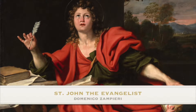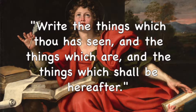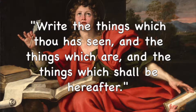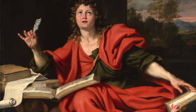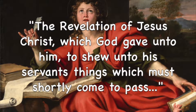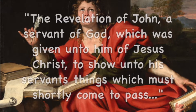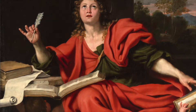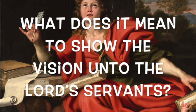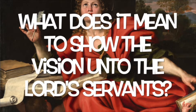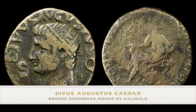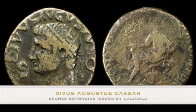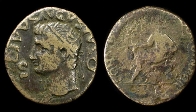John was commanded to write down his vision for the seven servants of the seven churches. But he was also commanded to show it unto the Lord's servants. Joseph Smith retained this wording in his prophetic restoration. To show someone a vision is more than just writing it down and letting others read it — it means to present the vision to the sight of others.